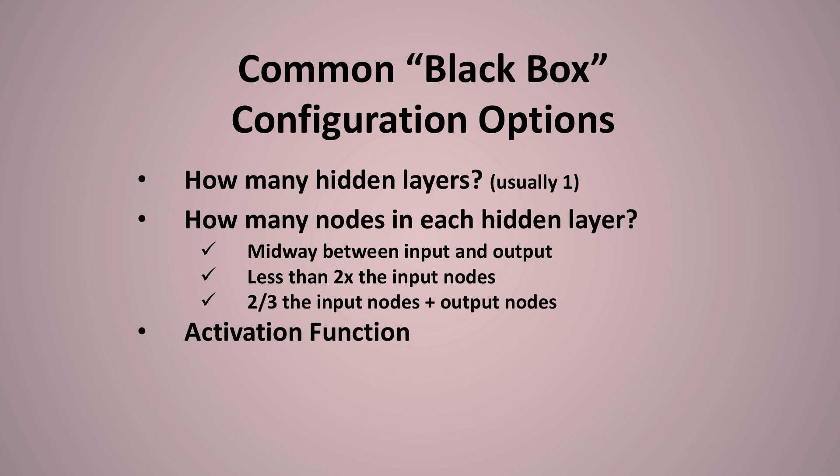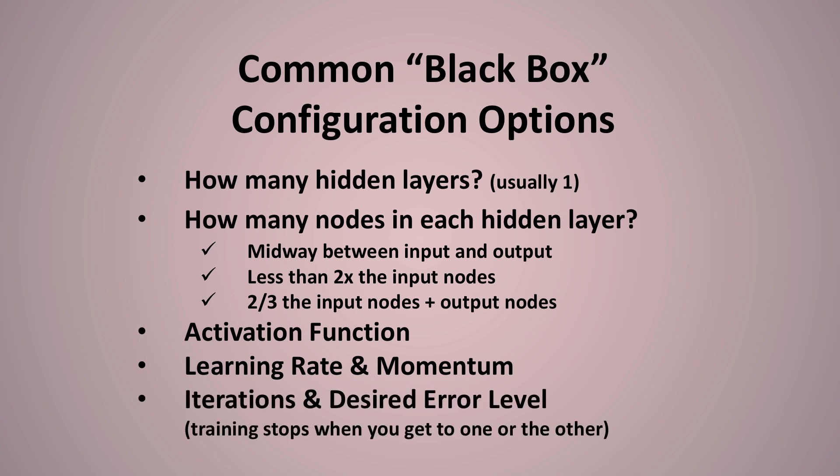An activation function. This is very important, but I'm not going to go into it right now. Also, learning rate and momentum are important, but I'm not going to go into those right now. Lastly, the iterations and the desired error level. So iterations is how many times it goes over all the data in your data set. The desired error level is how accurate do you want this thing to be? And depending on what you're going for, basically training stops until you get to one or the other, until you've gone through say 20,000 iterations or until your error level is 0.0001 and it's pretty accurate.